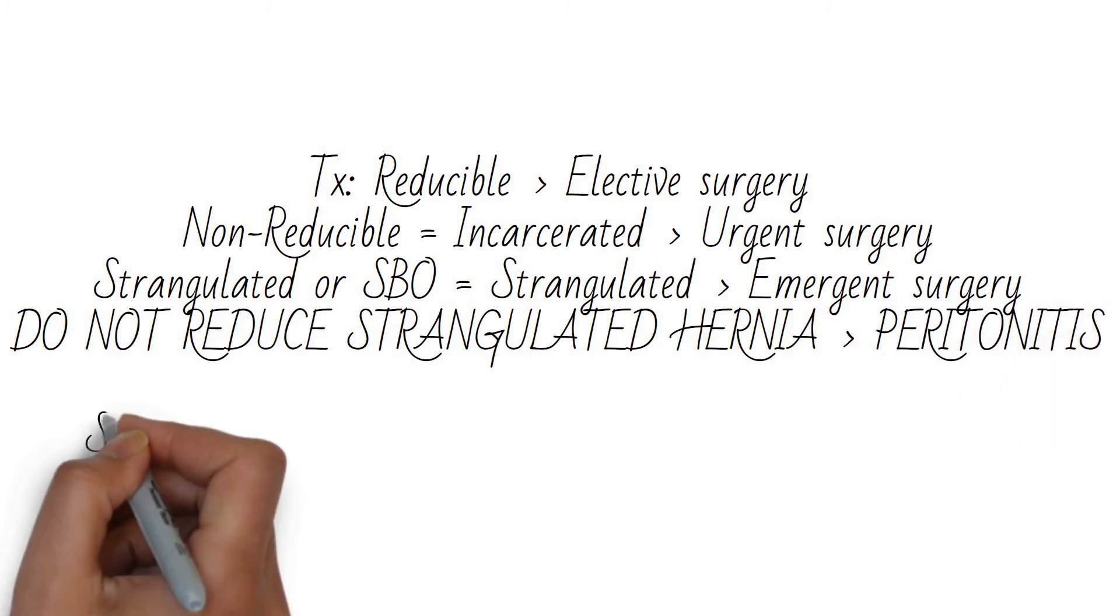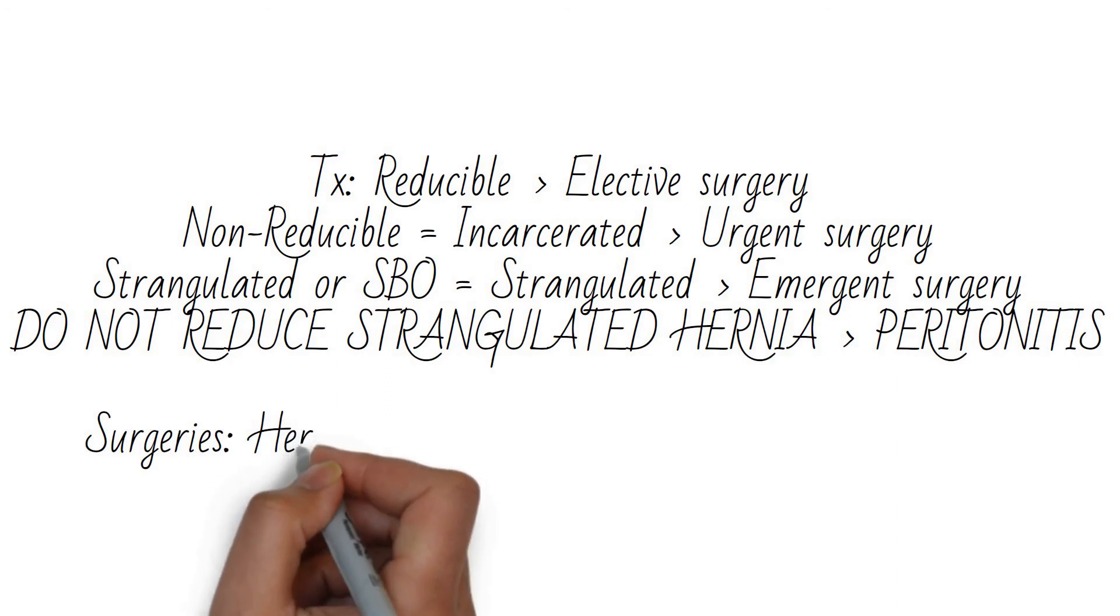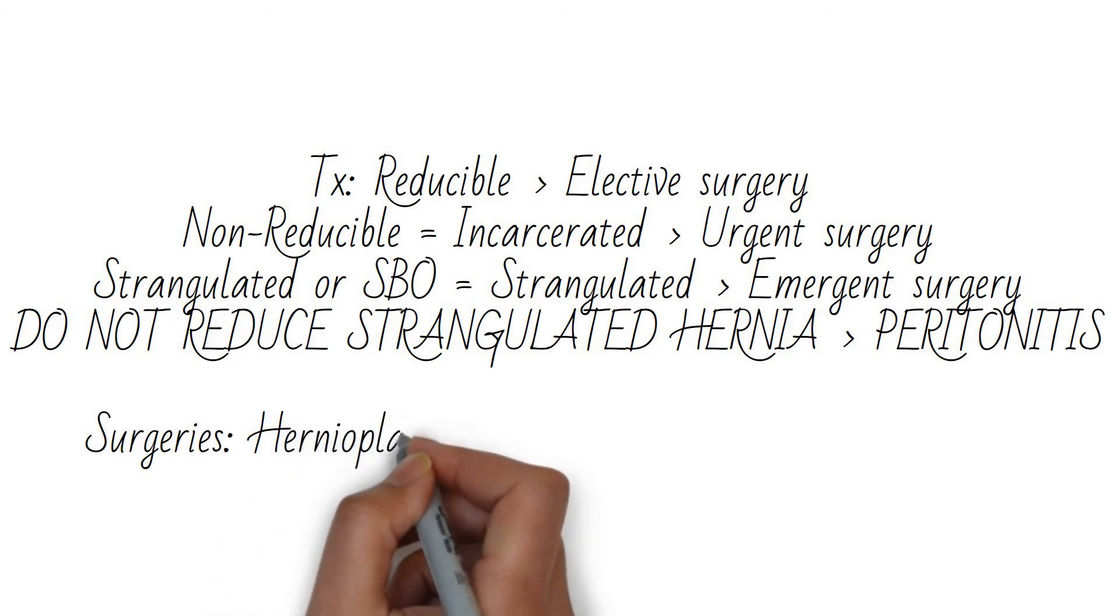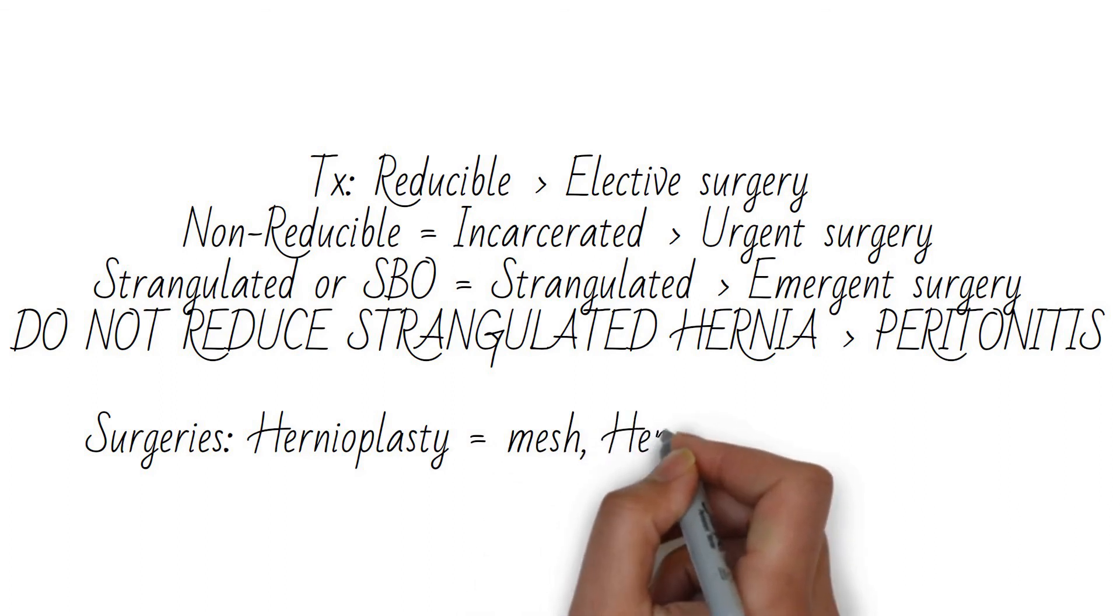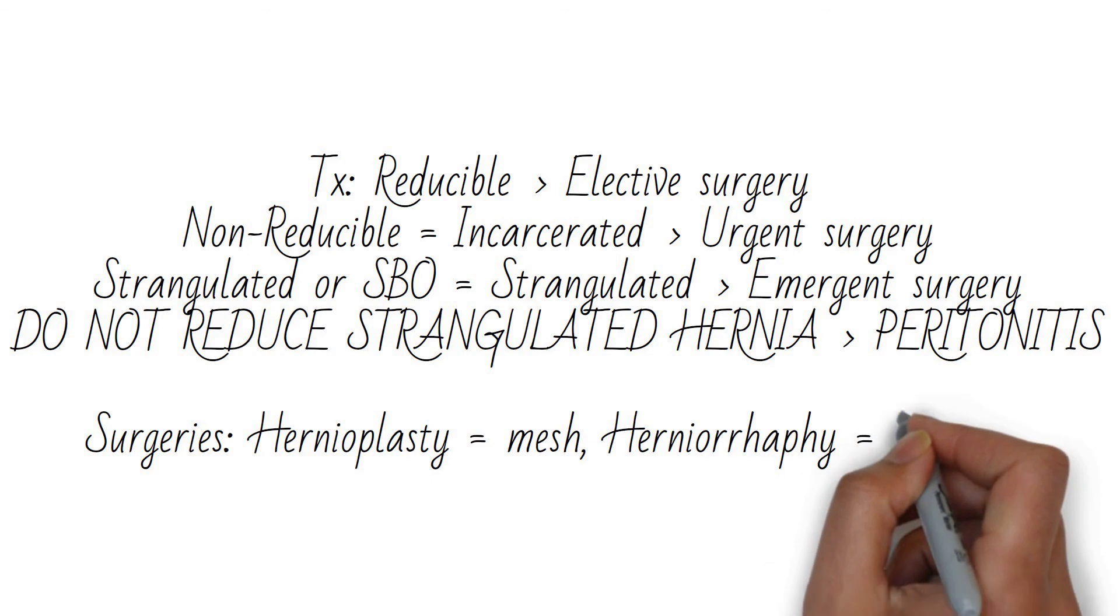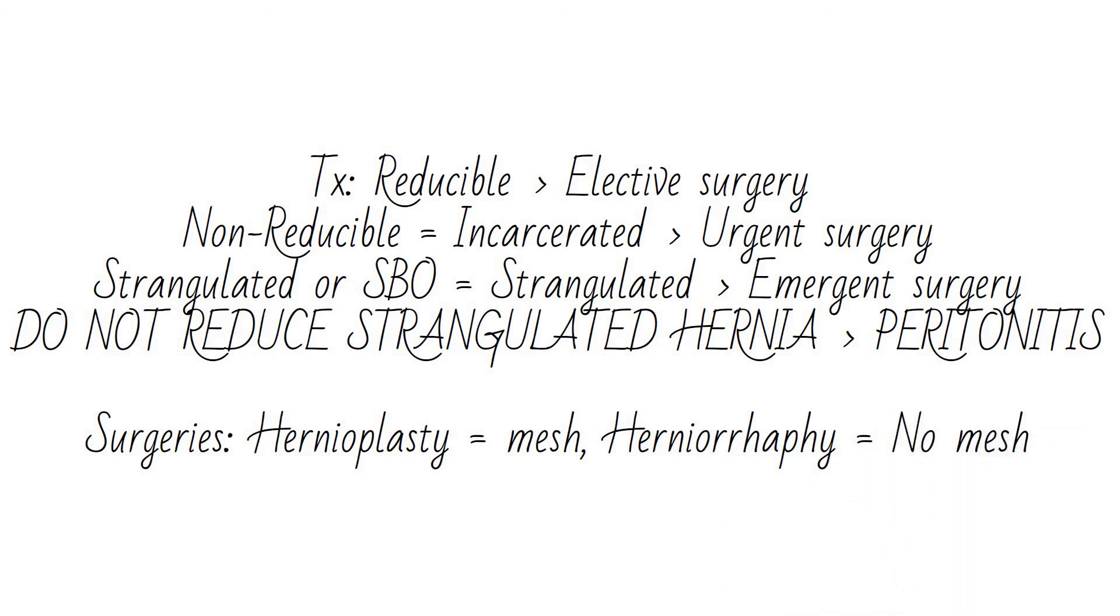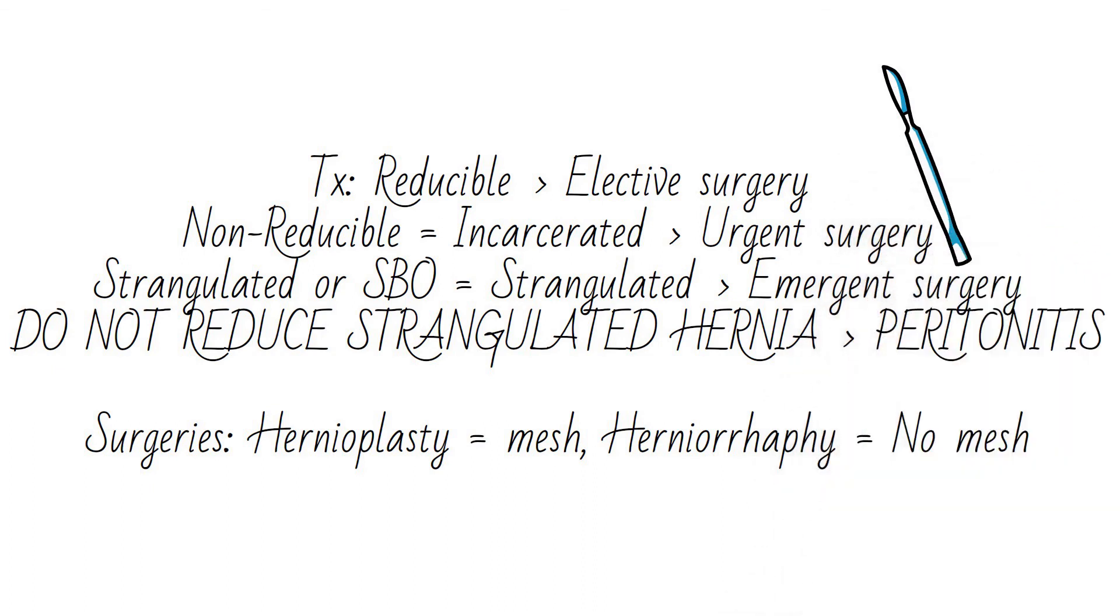Surgical treatment involves reducing the hernia or removing any necrotic bowel and either reanastomosing or, if inflammation is present, making an ostomy to be reanastomosed several weeks later. Repair of the abdominal wall is with hernioplasty, meaning a mesh is used to close the abdominal wall, or herniorrhaphy, meaning that the abdominal wall is sutured closed.